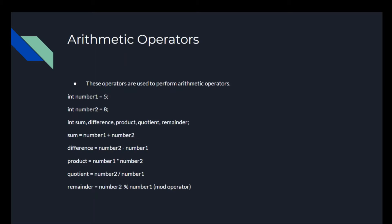We're going to write sum equals number1 plus number2. Difference equals number2 minus number1. Product equals number1 multiplied by number2. Quotient equals number2 divided by number1. And remainder equals number2 percent sign number1. This is the mod operator, and what it does is look for the remainder — it only works for the remainder.